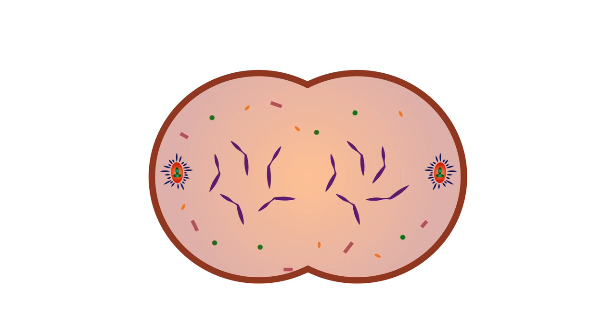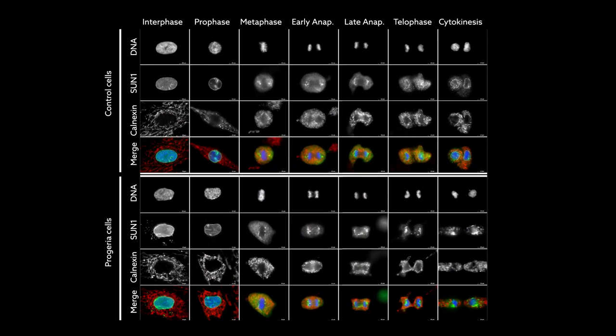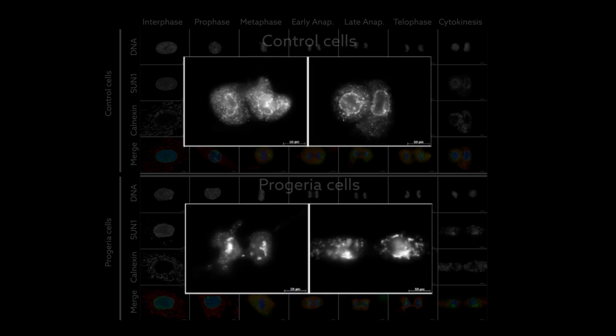Normally, those proteins lie throughout the cell during division before being called back to the nuclear membrane at the end of mitosis. Trapping in progeria cells delayed the reformation of the nuclear envelope, greatly deforming the boundaries of cell nuclei.